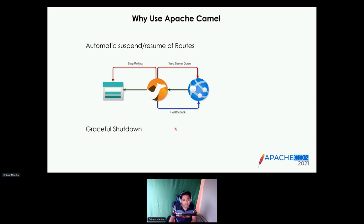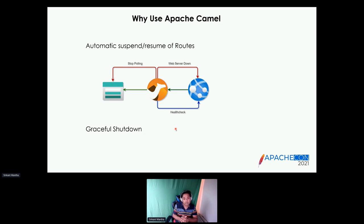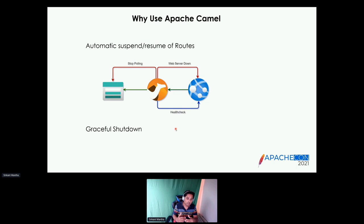Camel also provides a graceful shutdown. This means my application is processing millions of transactions, and it is possible that I'm deploying at the same time. With this property, the default is 45 seconds — until that time, it will continue to process all in-flight transactions before the application is shut down. In that way, I ensure that I don't miss any transactions and process them completely.